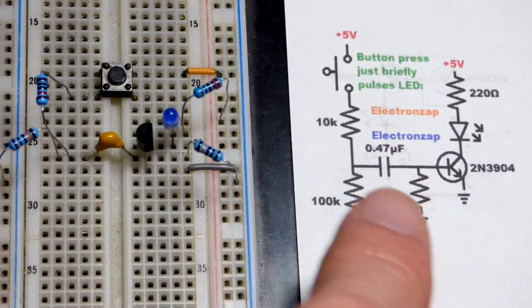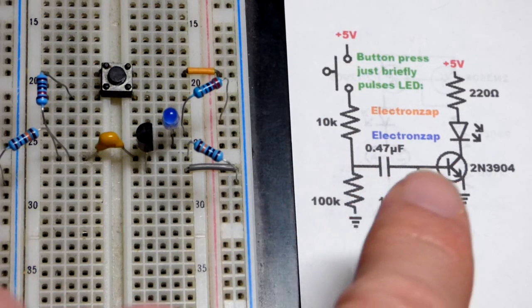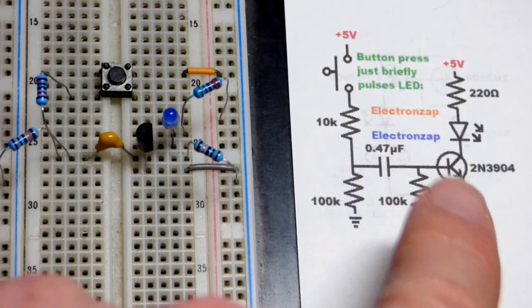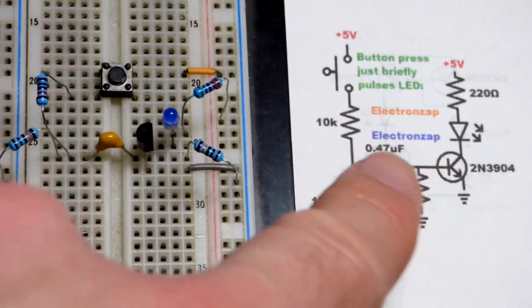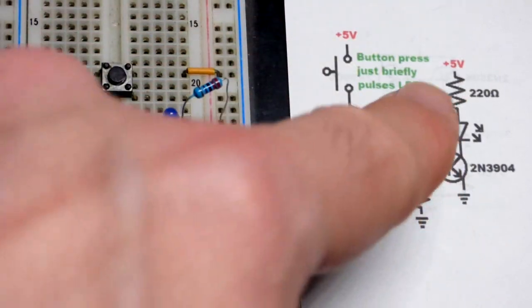Once it gets fully charged, then current stops flowing, and thus there's no more current from base-to-emitter. So while the current's flowing right when we press the switch, then the transistor is on pretty much fully.